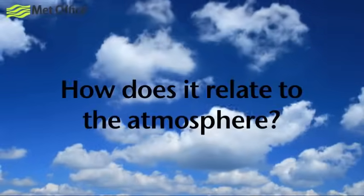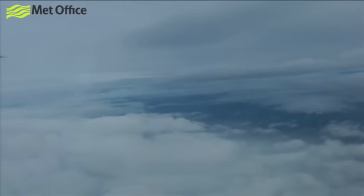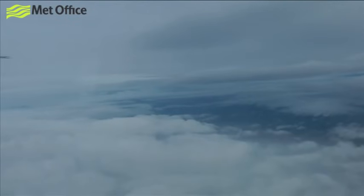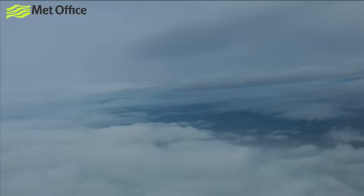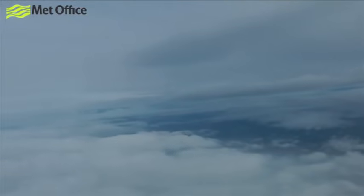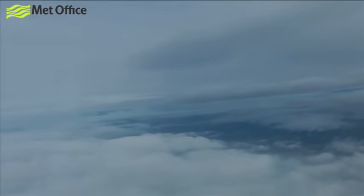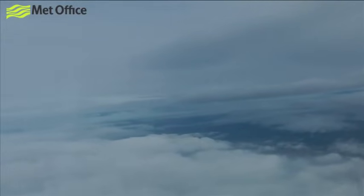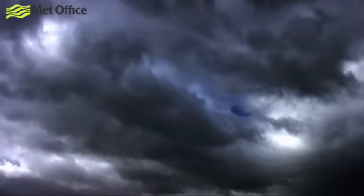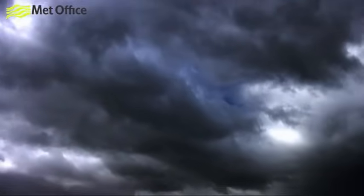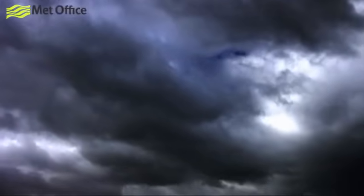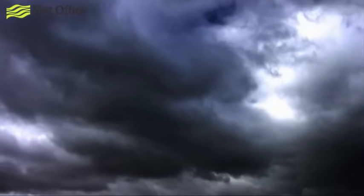How does this relate to the atmosphere? If you look at a cloud from above, you see it mainly by the sunlight reflected off it or scattered by it. Whereas if you see it from below, a lot of the incident sunlight has been scattered, making the cloud seem darker than the surrounding sky.